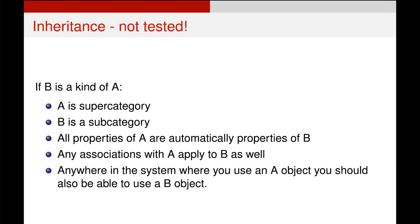To be clear, inheritance says that the class gaining the inheritance is a subcategory of the broader thing. So a seller is a subcategory of a user, and user is the supercategory in this example. All the properties of user are automatically properties of seller, and any associations of user also apply to seller. Importantly, anywhere in the system where you use a user object you must also be able to use a seller object, because they should have all the same behavior — it's just that the seller has a little bit more.